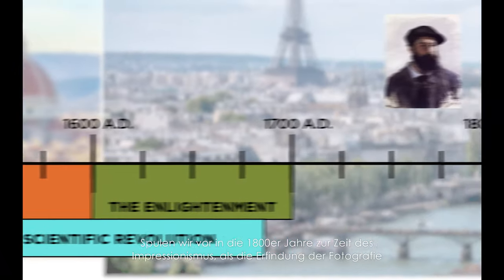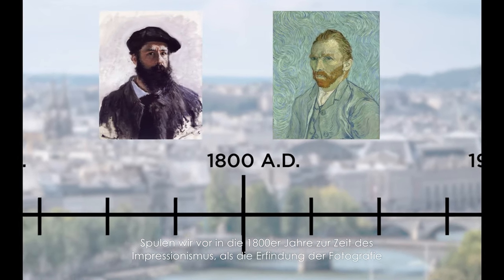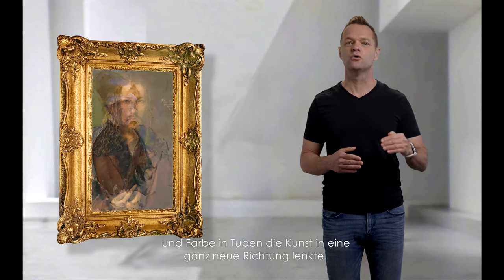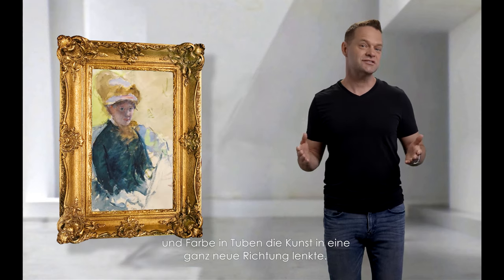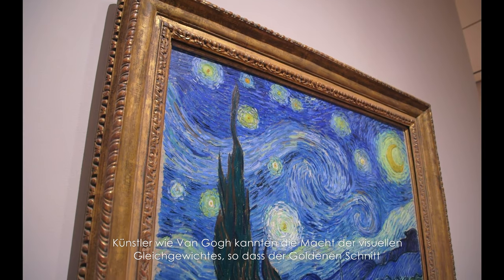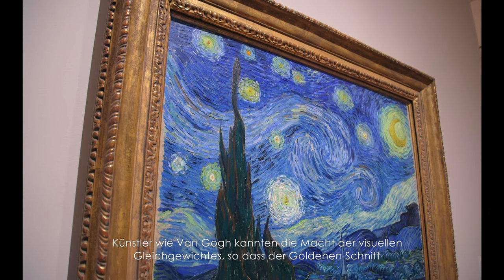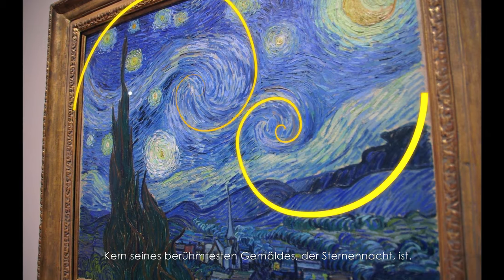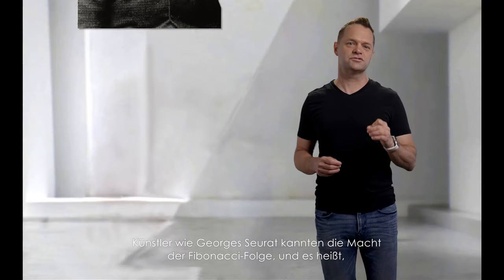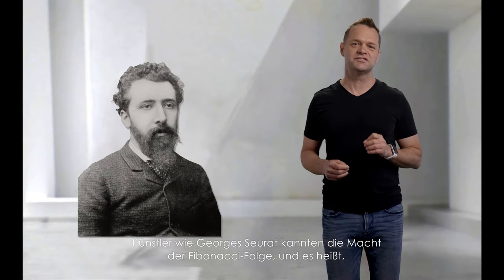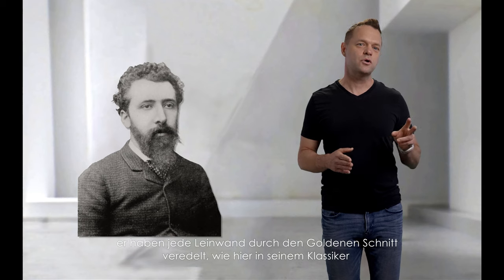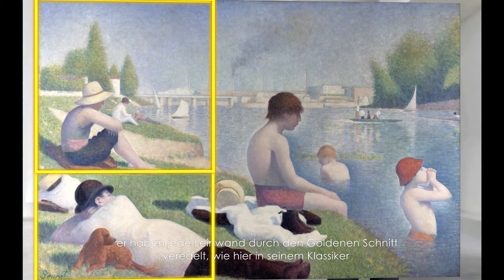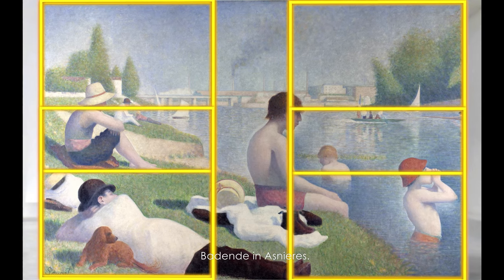Fast forward to the 1800s during the impressionist period, where the invention of the camera and paint in tubes pushed art in a whole new direction. Artists like van Gogh knew the power of visual balance, which is at the core of the golden ratio, seen in his most famous painting Starry Night. Artists like Georges Seurat knew the power of the Fibonacci sequence and is said to have 'attacked every canvas by the golden section,' as he did in his classic Bathers at Aznières.